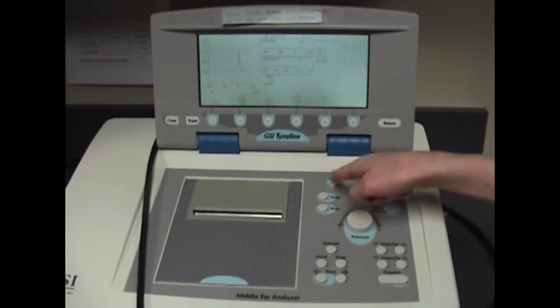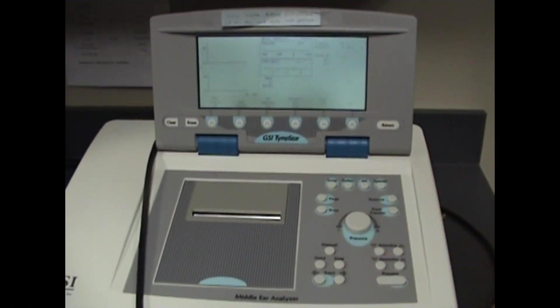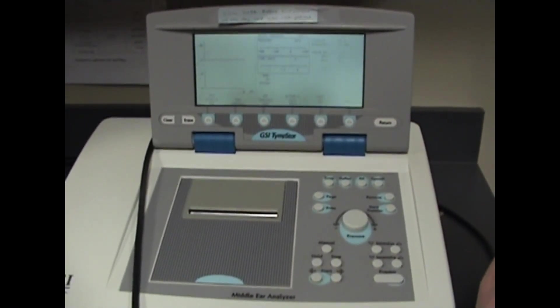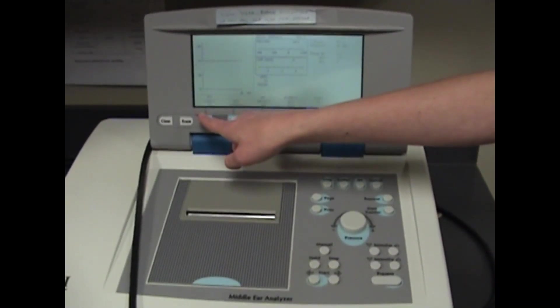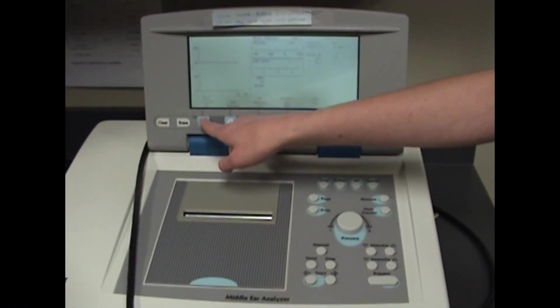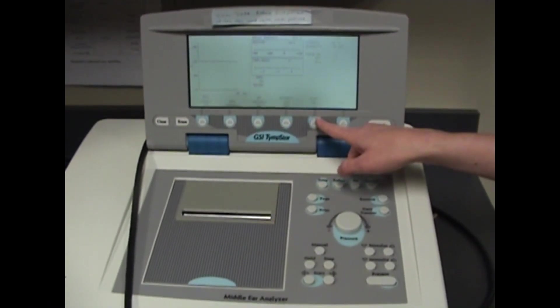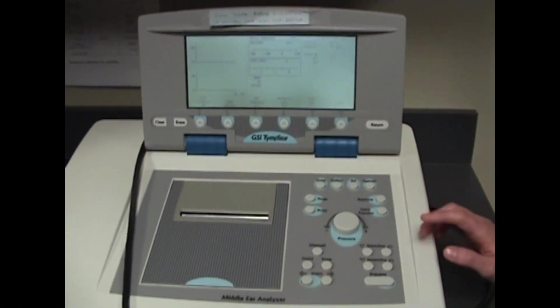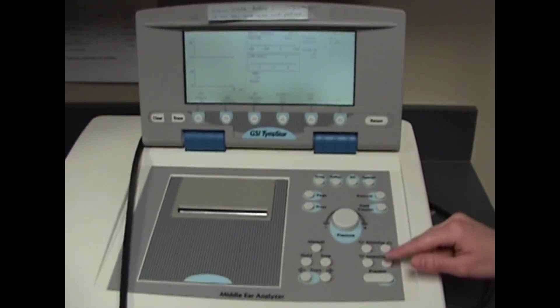Once you have the tympanogram, instead of temp mode we'll press the reflex button. The first measurement we're going to do is ipsilateral reflex from the right ear. Make sure your menu choices are correct—it should display ipsilateral stimulus ear, and the right ear should be selected.